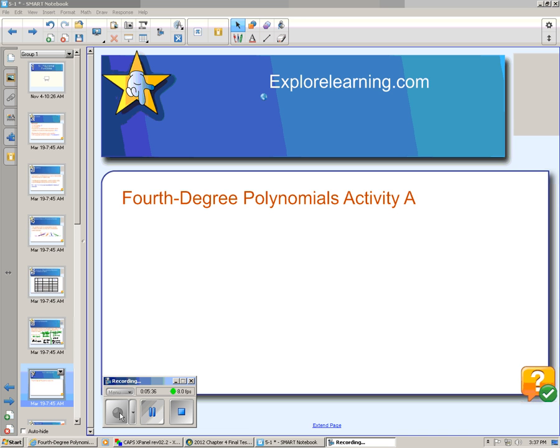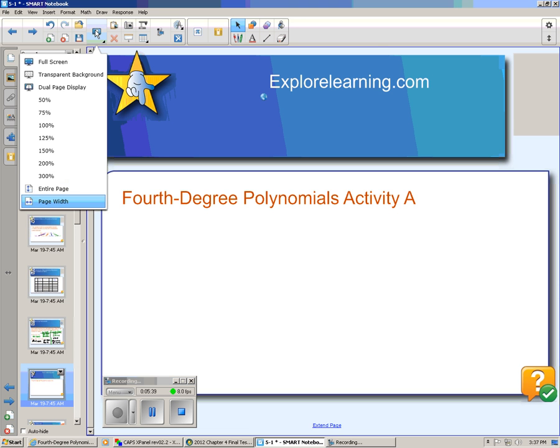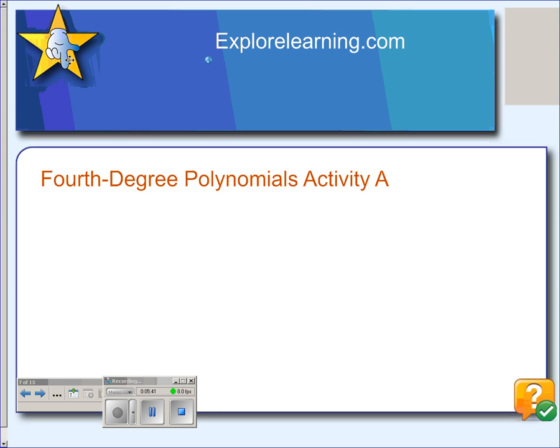When you get to class, we're going to do an Explore Learning activity. If you want a head start on it, you can take a look at it on Moodle, or you can just go to explorelearning.com and look it up. But I just want to give you a simplified version right now. If you have a linear function, the parent function is just y equals x. When you graph it, it looks like a straight line heading through the origin.